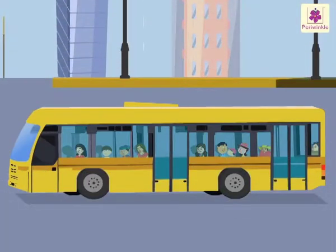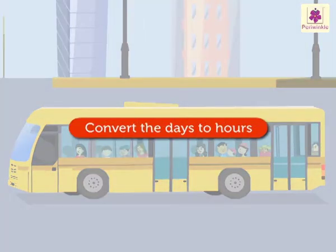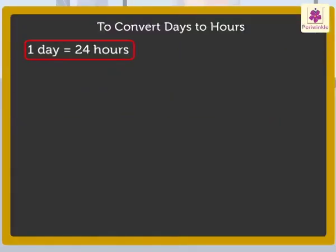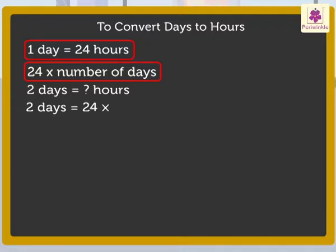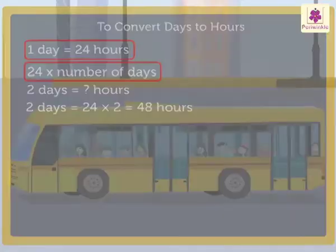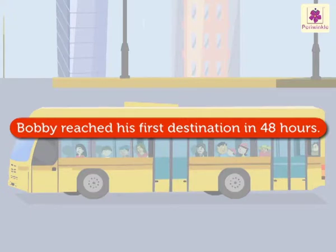To find the answer, we need to convert the days to hours. We already know that there are 24 hours in a day. Therefore, to convert days to hours, we have to multiply 24 by the number of days. So, two days is equal to 24 into 2, which is equal to 48 hours. Bobby reached his first destination in 48 hours.